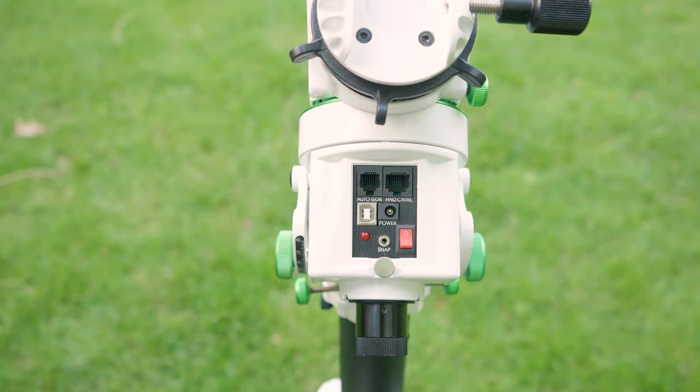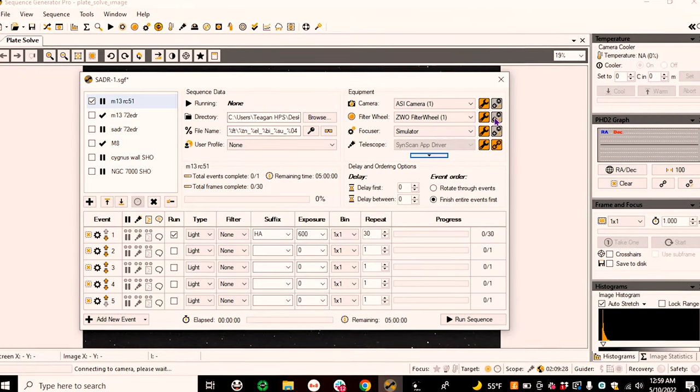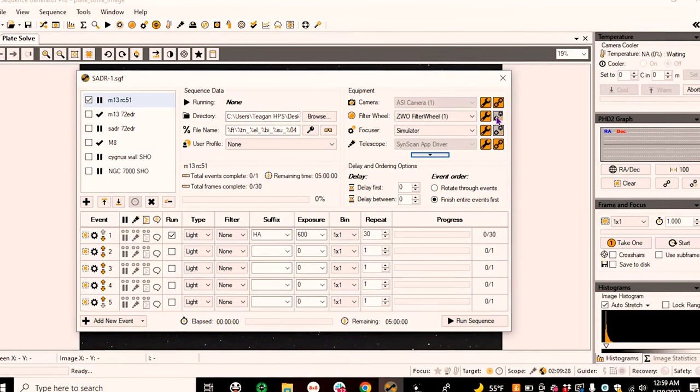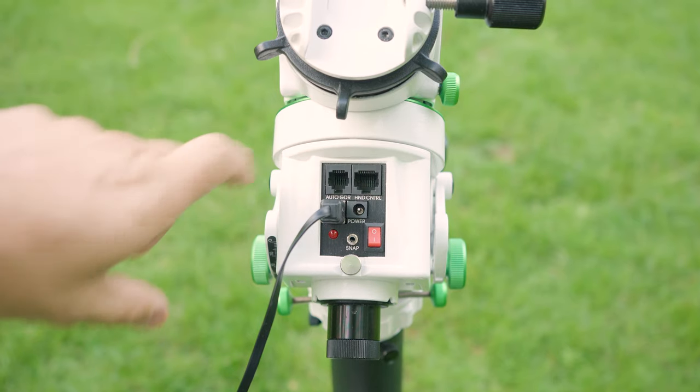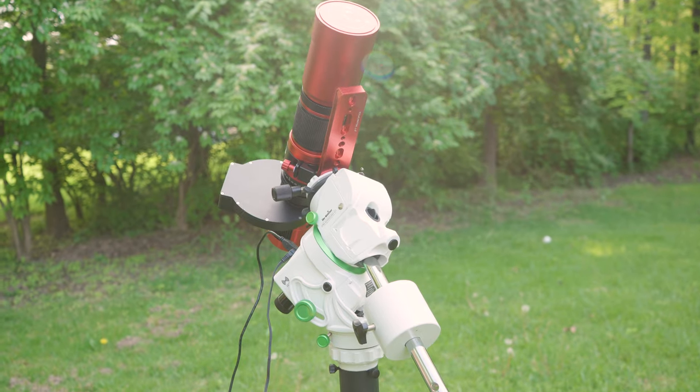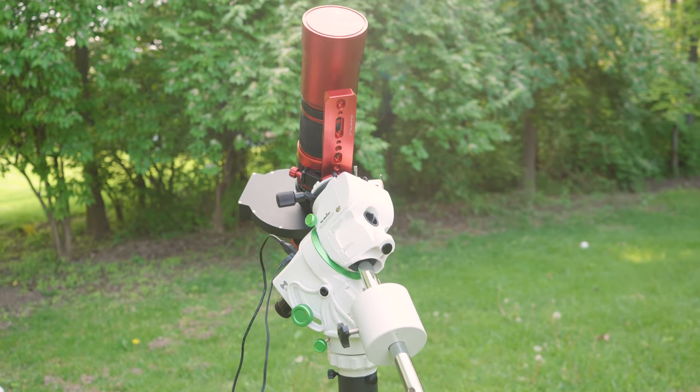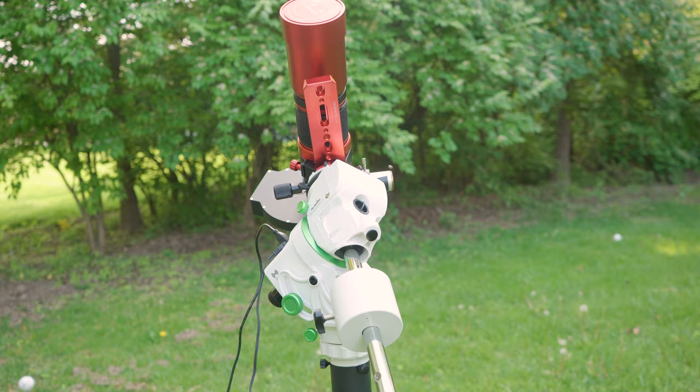First you have the onboard USB port. This allows for full computer control of all accessories and equipment through a laptop. More on this in a bit. Next they have a hand controller port for those who like to manually slew without the use of a smartphone or an app or a laptop and those who may use this for visual work.